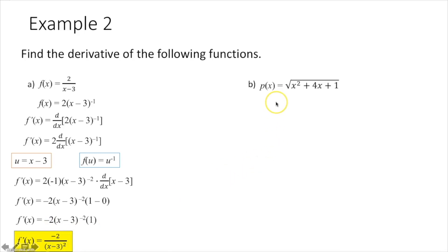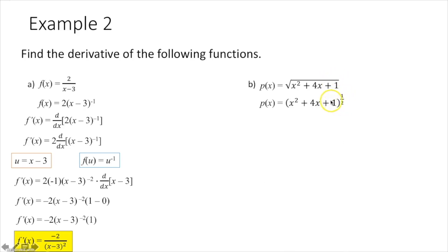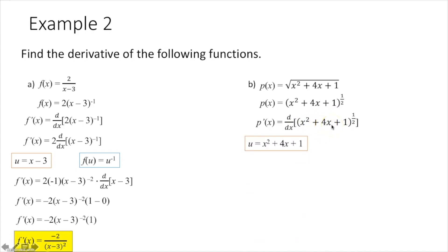For part b, we're taking the derivative. We again have a function that needs to be rewritten — I don't want to take the derivative using a radical, I want an exponent. The square root is the one-half power. Now I see that I have an inner function and an outer function, so I have to use the chain rule. I start by finding my innermost function: u is equal to x squared plus 4x plus 1. My outermost function is going to be u to the one-half power.